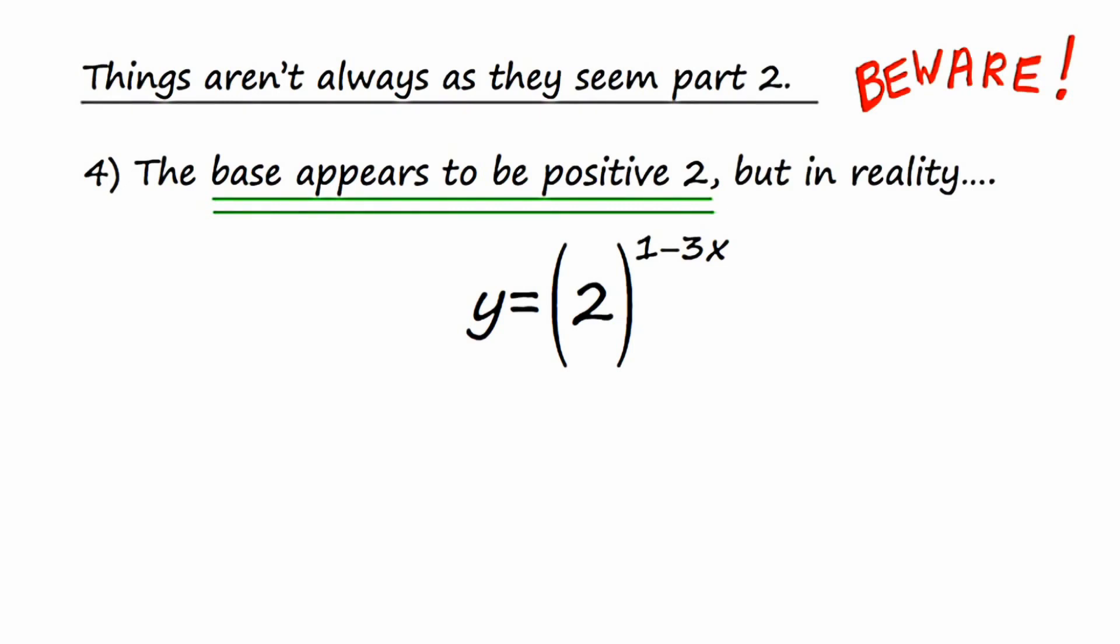So we're going to have to do some manipulation. And I'm going to start by swapping the positions of the 1 and the negative 3x. That's going to get me y equals 2 to the negative 3x plus 1. Now the next thing that I'm going to do is I'm going to factor out a negative 3 from the exponent. By doing this, I'm left with y equals 2 to the negative third times x minus 1 third. Now if you're not sure exactly how I did that, you could always redistribute to check what I did and make sure you understand where that all came from.